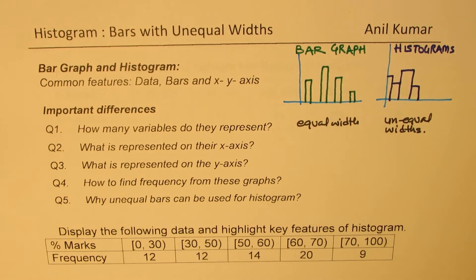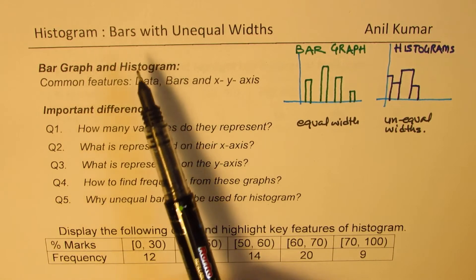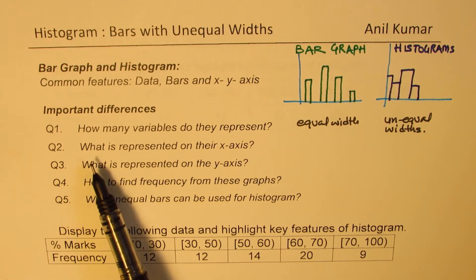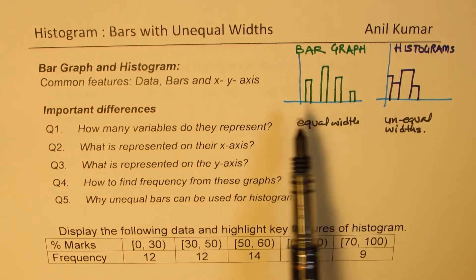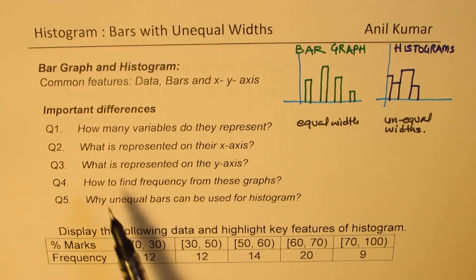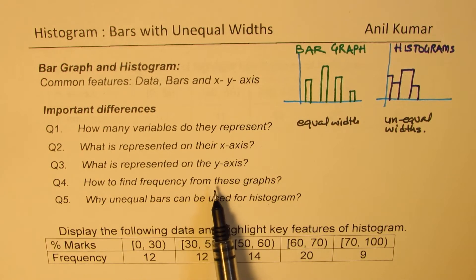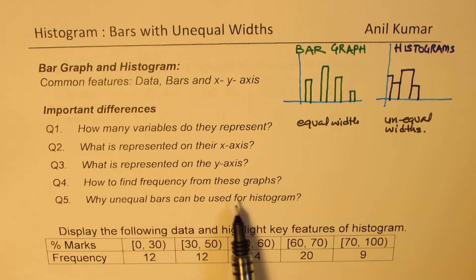Well, here we have five very important questions. If you answer these questions you will actually know the real differences between bar graphs and histograms. Question one: how many variables do they represent? Question two: what is represented on their x-axis? Question three: what is represented on the y-axis? Question four: how to find frequency from these graphs? And question five: why can unequal bars be used for histograms? I'd like you to pause the video and answer these, so you will understand the difference between the two.